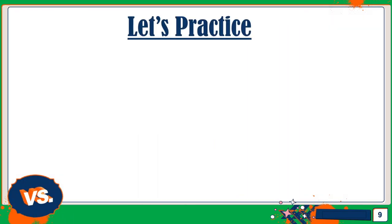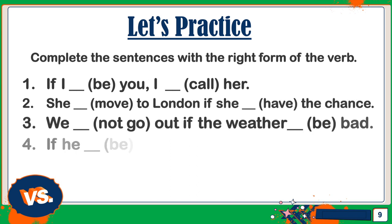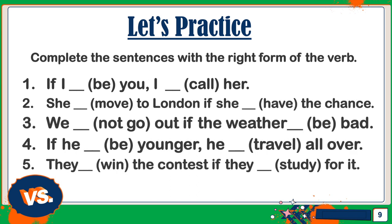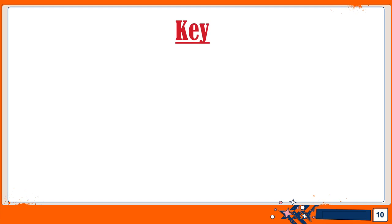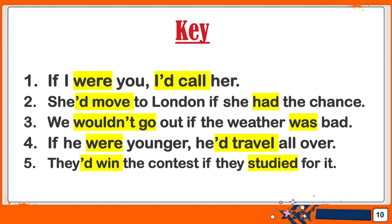So now let's practice. Complete the sentences with the right form of the verb. I will give you 5 minutes to complete it, so pause the video, and then I will give you the key. Now that you're ready, let's take a look at the key: If I were you, I'd call her. She'd move to London if she had the chance. We wouldn't go out if the weather was bad. If he were younger, he'd travel all over. They'd win the contest if they studied for it.